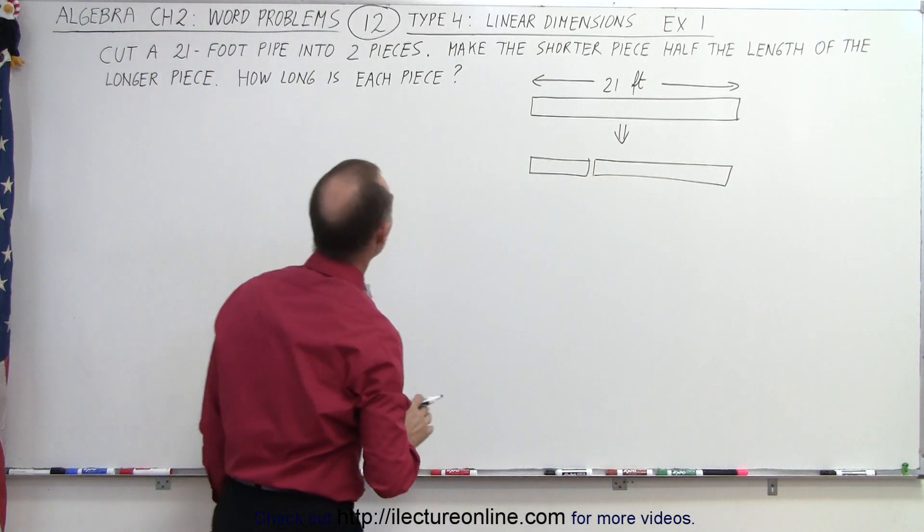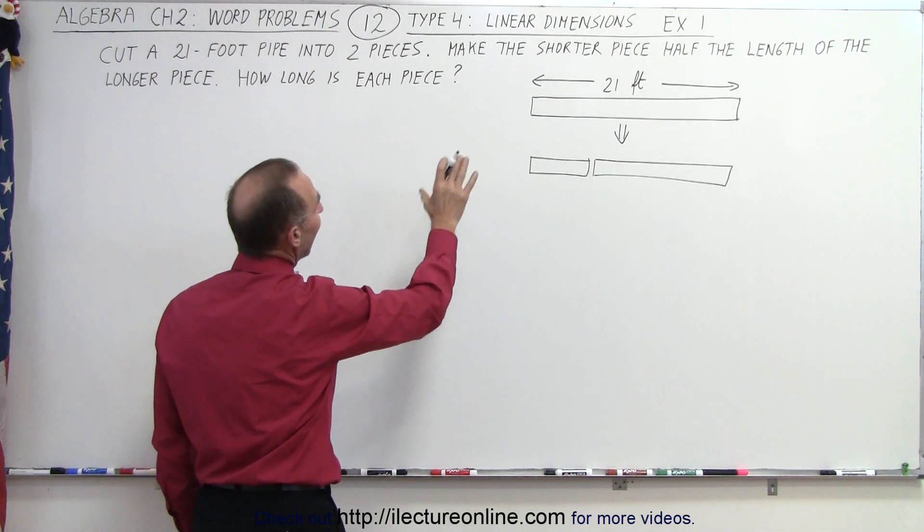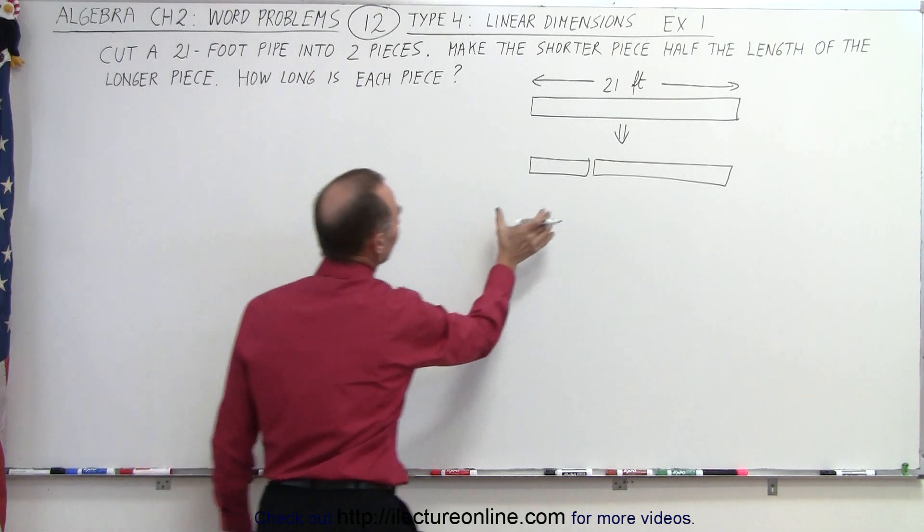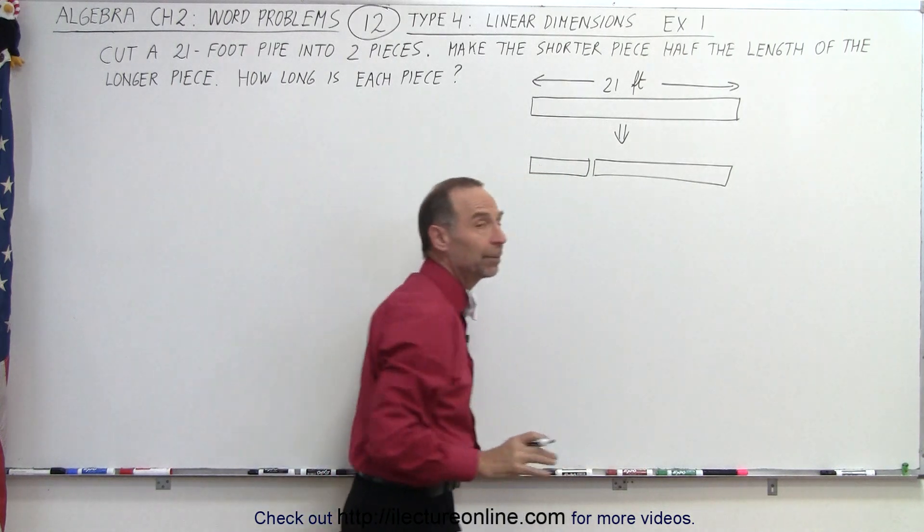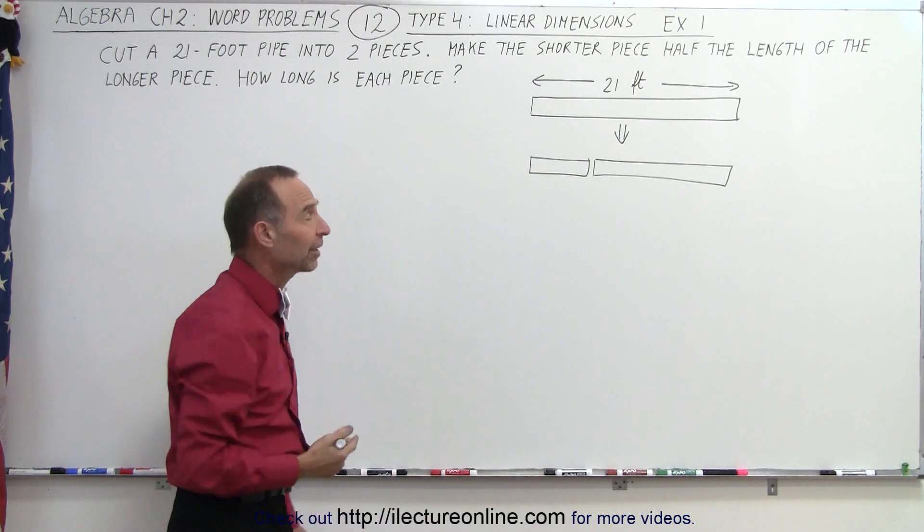They tell us that the shorter piece is half the length of the longer piece. That means the length of this little piece is only half as much as the length of the big piece. Now, how do we solve that problem?